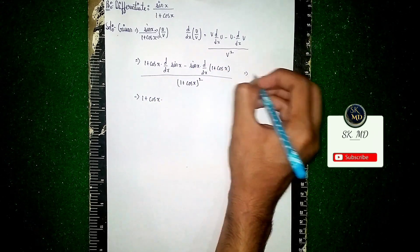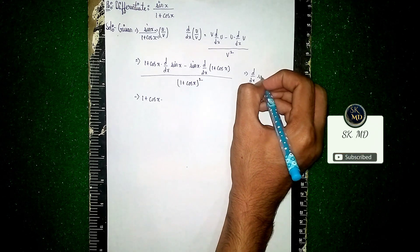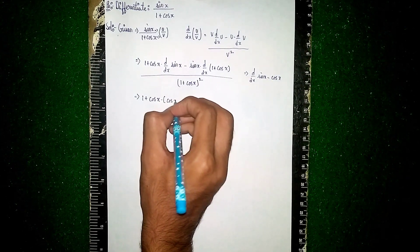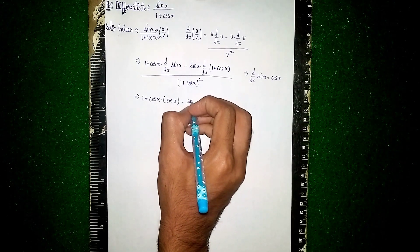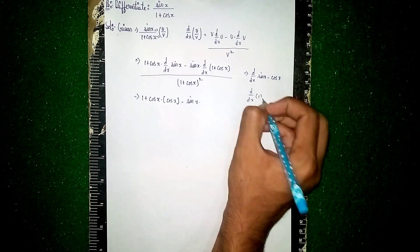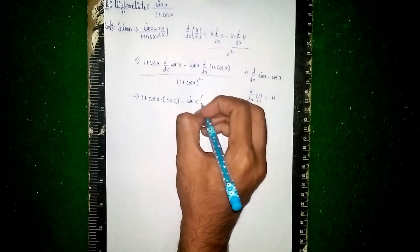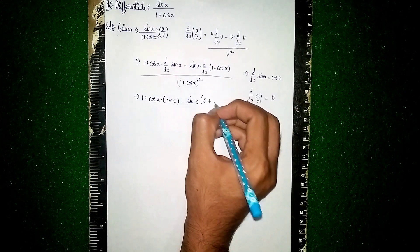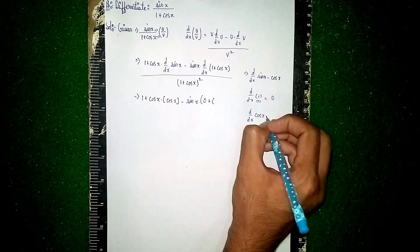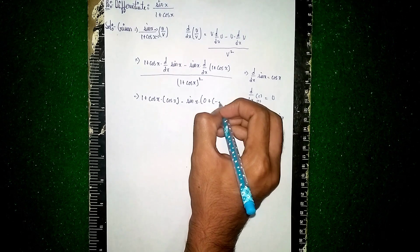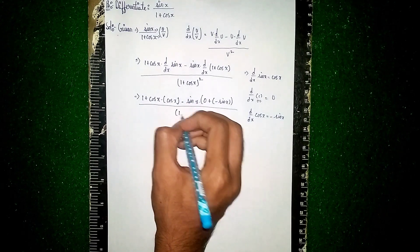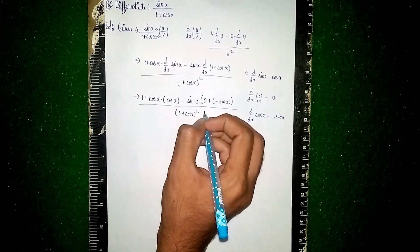Now, d/dx of sin(x) equals cos(x), so that becomes cos(x). Then minus sin(x) times the derivative of (1 + cos(x)). The d/dx of any constant is 0, and d/dx of cos(x) is minus sin(x). So the bracket becomes (0 + (−sin(x))), divided by (1 + cos(x))².